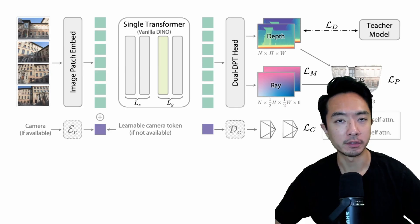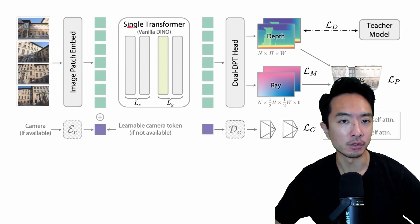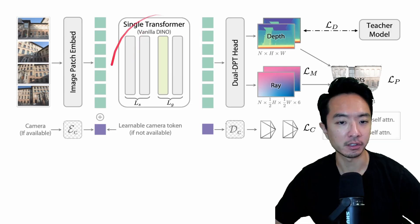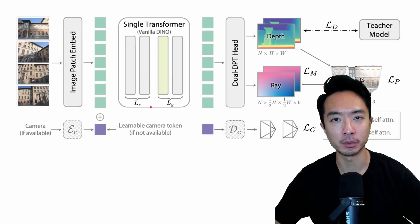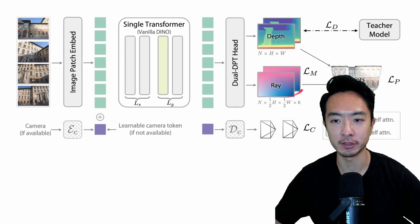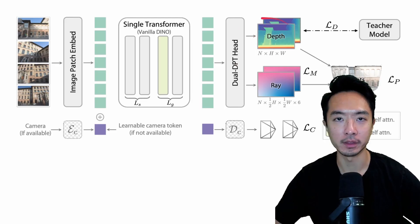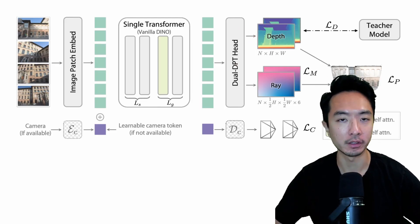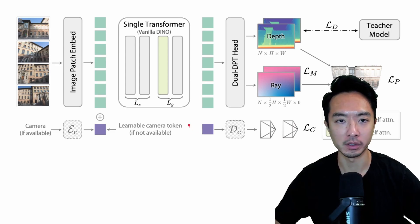A key feature of DepthAnything V3 is that it uses a single transformer vanilla DINO architecture. So it's a very simple model compared with a lot of the other complex SLAM and 3D reconstruction models. It also has a ray component that comes out of the dual DPT head combined with the depth output, and together you get a 3D point cloud. It's pretty small and lightweight and good for some real-time applications.